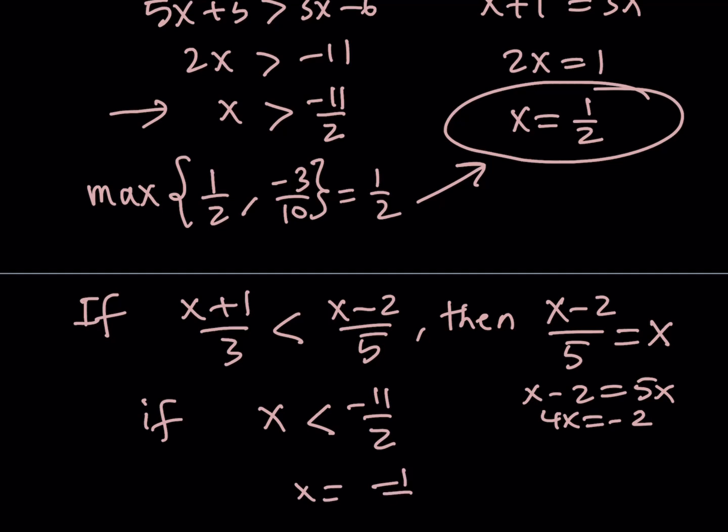Now, is this true if x is less than negative 11 halves, then x should be negative 1 half? Obviously, that's not true because negative 11 halves, anything less than negative 11 halves, can never equal negative 1 half because negative 1 half is greater than negative 11 halves. Does that make sense? So this is not a valid solution.